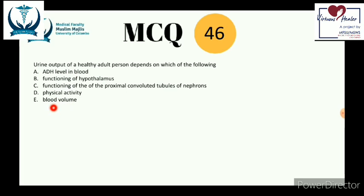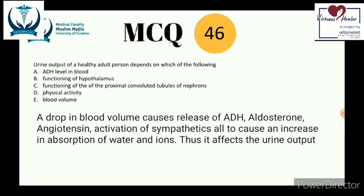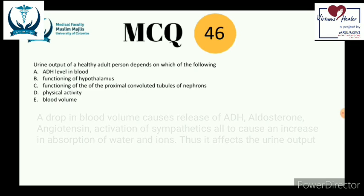Blood volume is the single most important determinant of urine output. When blood volume decreases, blood pressure drops, triggering release of ADH, aldosterone, and angiotensin, and activating the sympathetic nervous system. The collective result is increased water reabsorption to restore blood volume and blood pressure. Aldosterone, angiotensin, and ADH all increase water reabsorption — blood volume is critical in ensuring urine output maintains homeostasis.